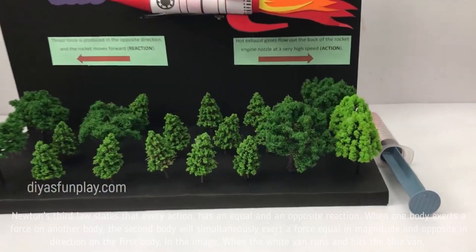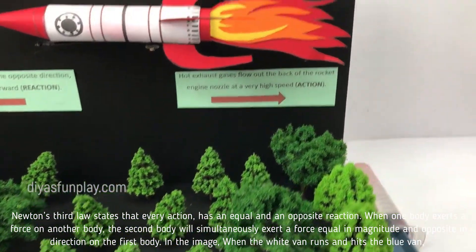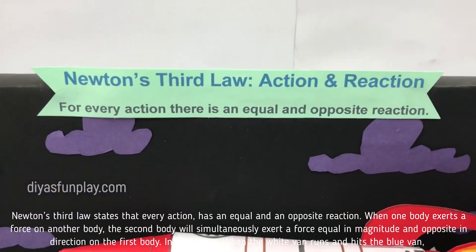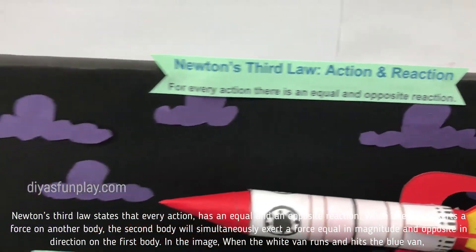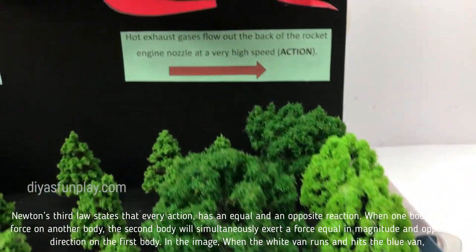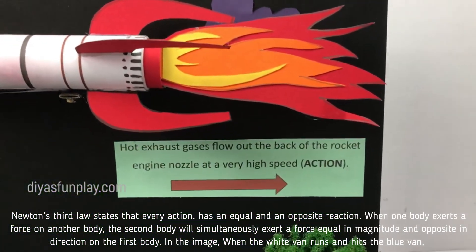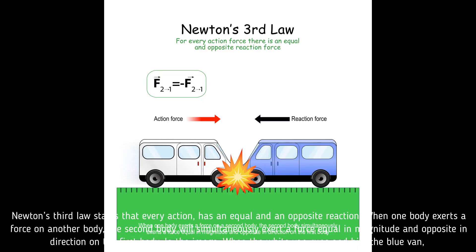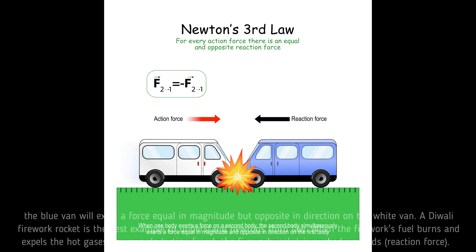Newton's third law states that every action has an equal and an opposite reaction. When one body exerts a force on another body, the second body will simultaneously exert a force equal in magnitude and opposite in direction on the first body. In the image, when the white van runs and hits a blue van, the blue van will exert a force equal in magnitude but opposite in direction on the white van.